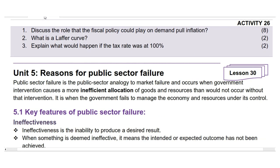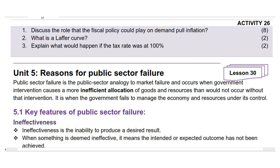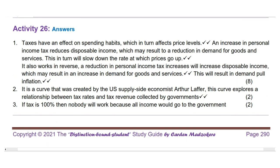Question 2: What is a Laffer curve? (2 marks.) It is a curve created by U.S. supply-side economist Arthur Laffer. This curve explores the relationship between tax rates and tax revenue collected by governments. Question 3: Explain what would happen if the tax rate was at 100 percent. If tax is 100 percent, then nobody will work because all income would go to the government.